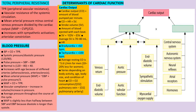Stroke volume is the amount of blood ejected with every beat; stroke volume equals end-diastolic volume minus end-systolic volume. Average stroke volume is around 70 to 80 ml. Ejection fraction is the proportion of end-diastolic blood pumped out during systole. The Frank-Starling mechanism states that the main determinant of cardiac output is venous return — so more blood returning to the heart means the heart pumps more blood.